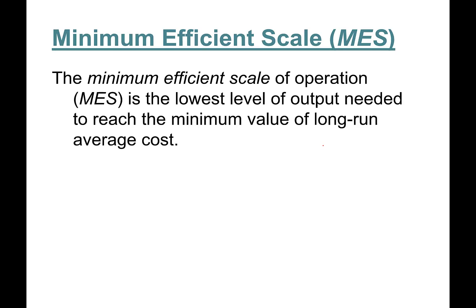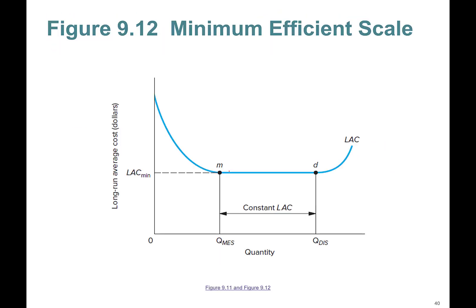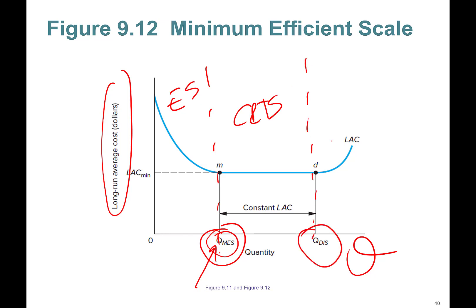Minimum efficient scale—finally we are here. The minimum efficient scale of operation is the lowest level of output needed to reach the minimum value of the long-run average cost curve. It's the point where we exhaust the full economies of scale. Here's the graph. Long-run average cost, quantity. Economies of scale—this region. Minimum efficient scale—where we reached the minimum efficient scale, this is the quantity. Constant returns to scale, constant average cost. This is the point where diseconomies of scale starts.